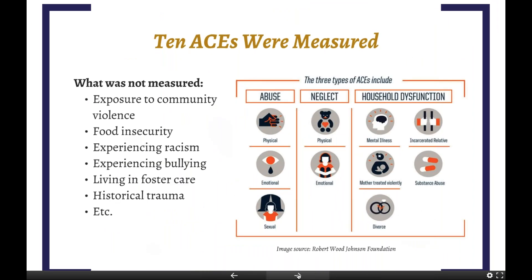This graph summarizes the 10 ACEs measured in the study. Each of the 10 measures falls into one of three categories: abuse, neglect, and household dysfunction. Each participant received a score between zero and 10, one point for each ACE they experienced before the age of 18. These are indeed significant sources of childhood adversity, but we also want to highlight that there are other sources of adversity not captured in this original framework — food insecurity, community violence, racism, bullying, living in foster care, and others.